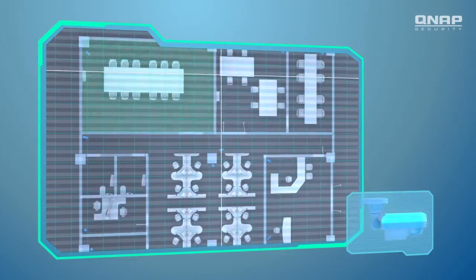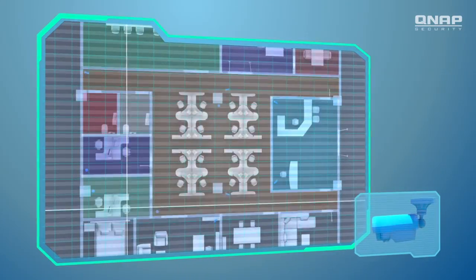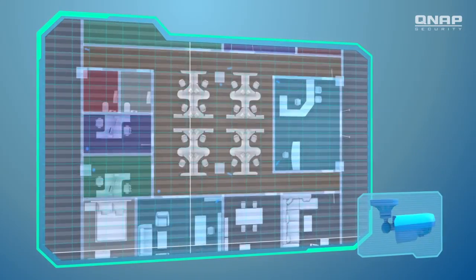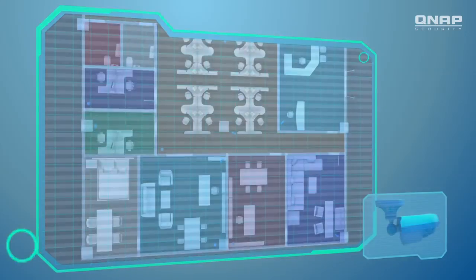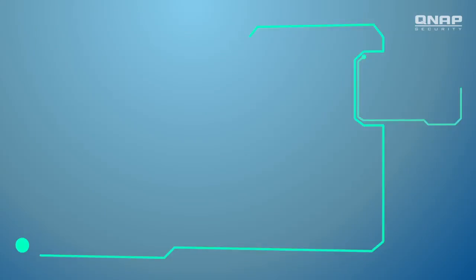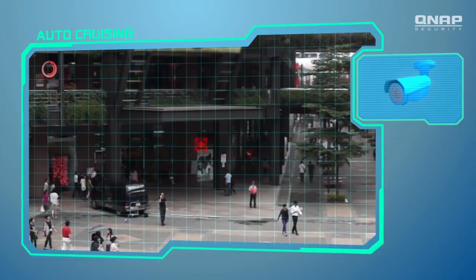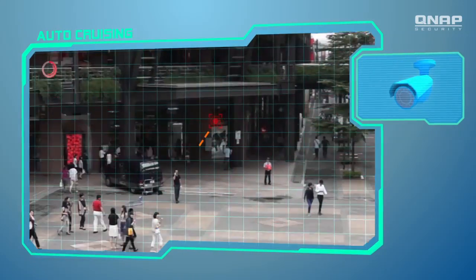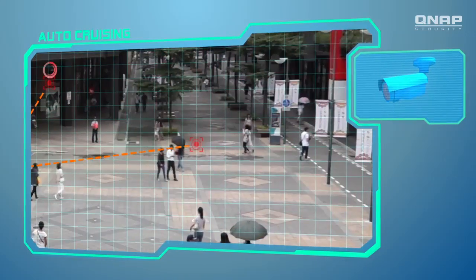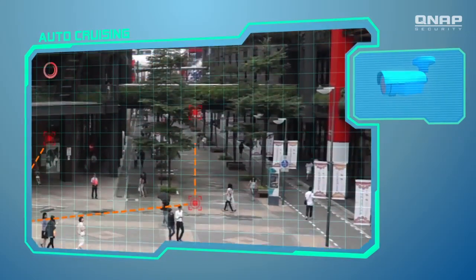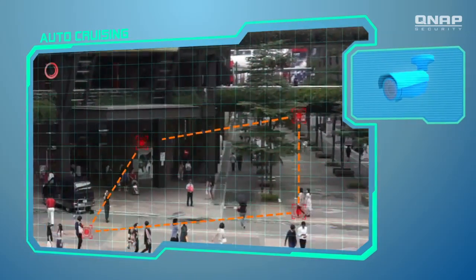You may wonder how to keep every corner of a monitoring site within your reach. Well, Viostore NVR is born smart. Just enable the auto-cruising function to automatically monitor the preset positions you define, moving from one spot to another in sequence.